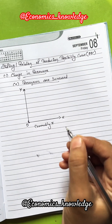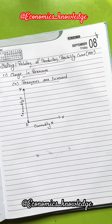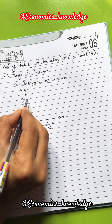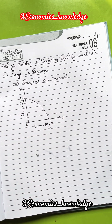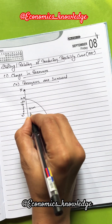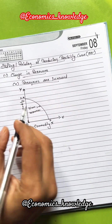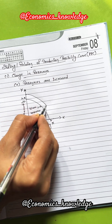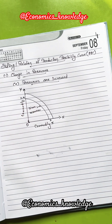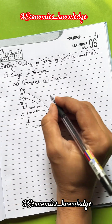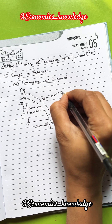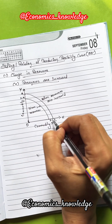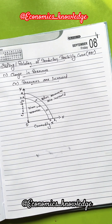Let's see the diagram. Commodity X and commodity Y are given on the diagram. This is the production possibility curve with the given resources. This curve will shift to the right when resources are increased.